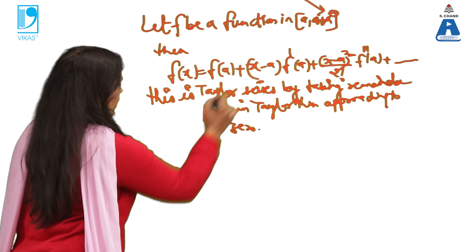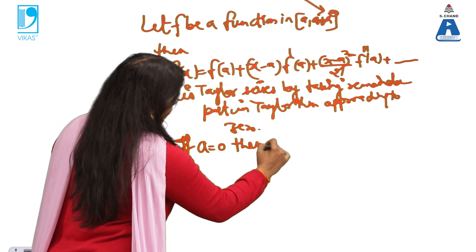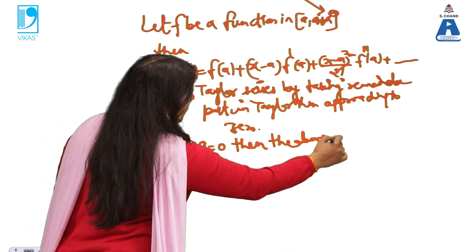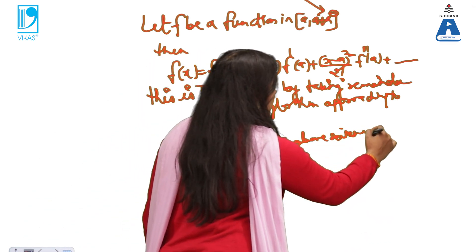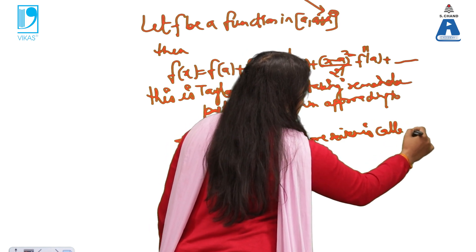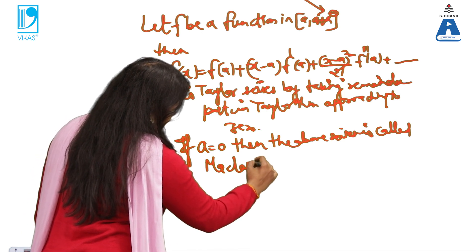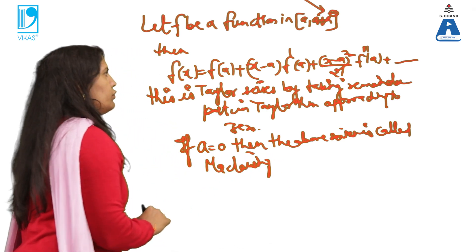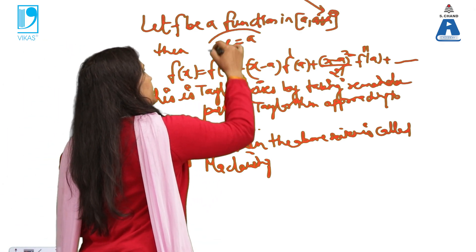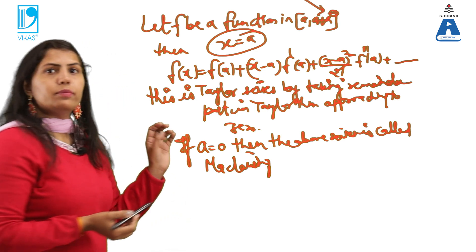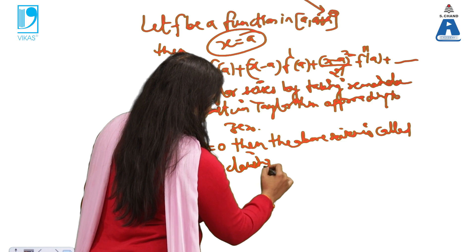Now, if a is zero, the above series is called the Maclaurin series. It means: if you expand a function as a Taylor series at the point x = 0, we call that the Maclaurin series.